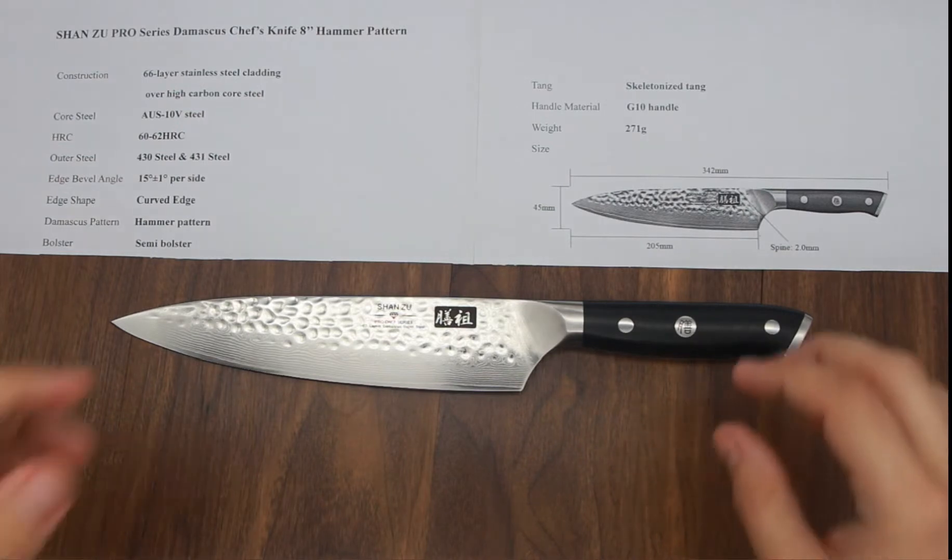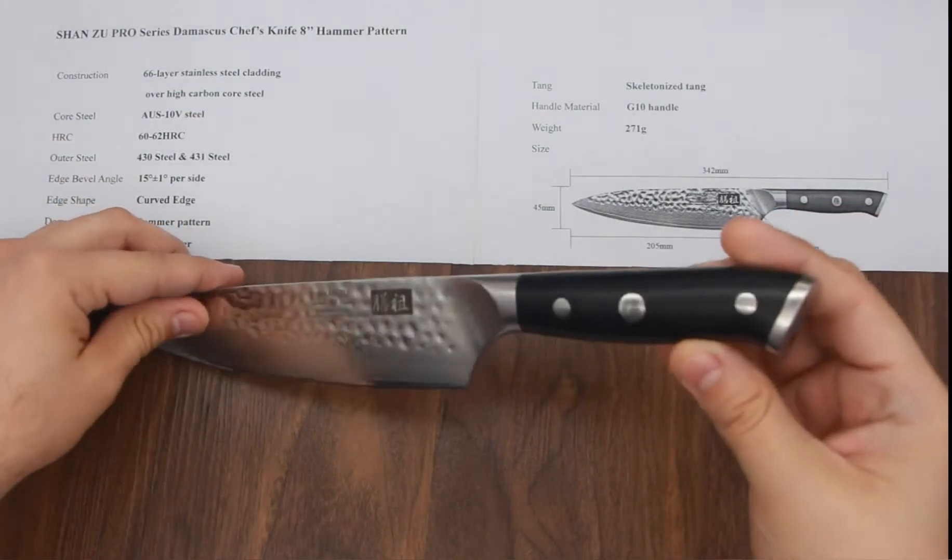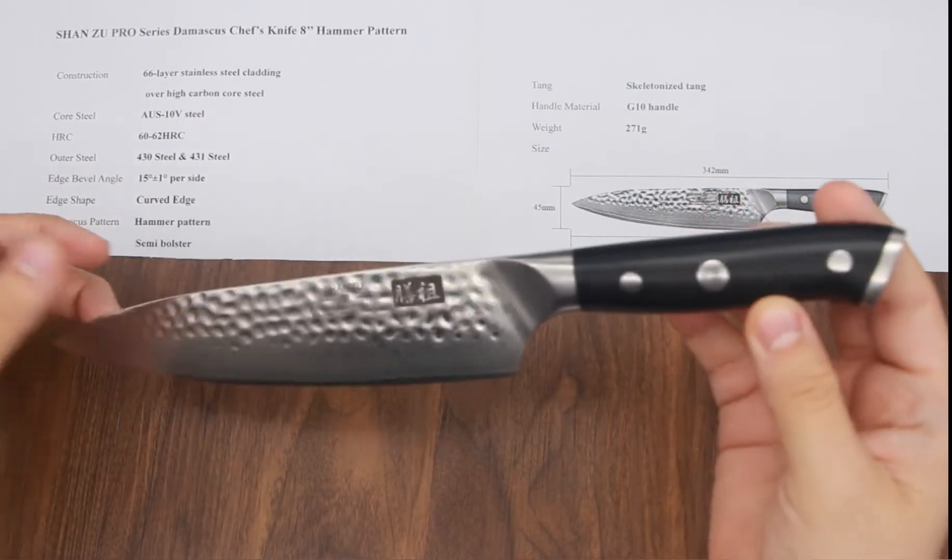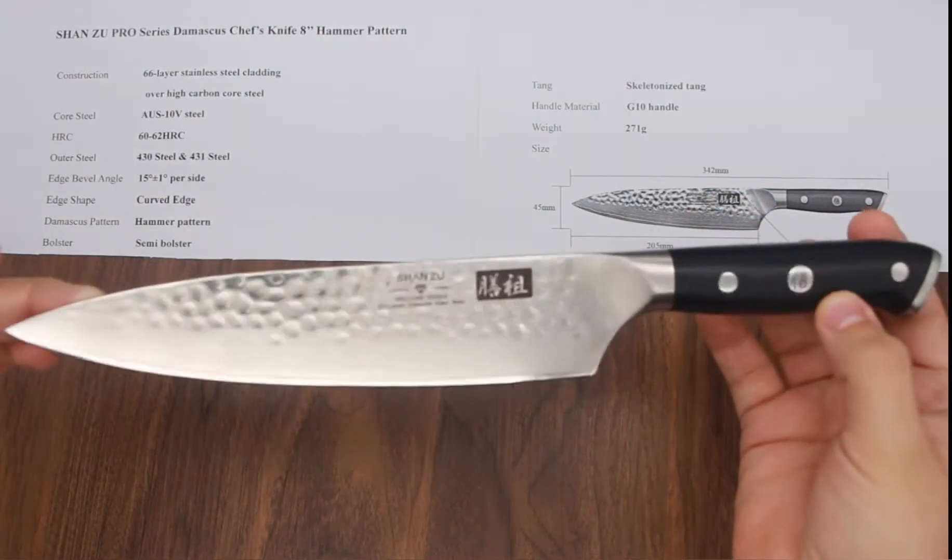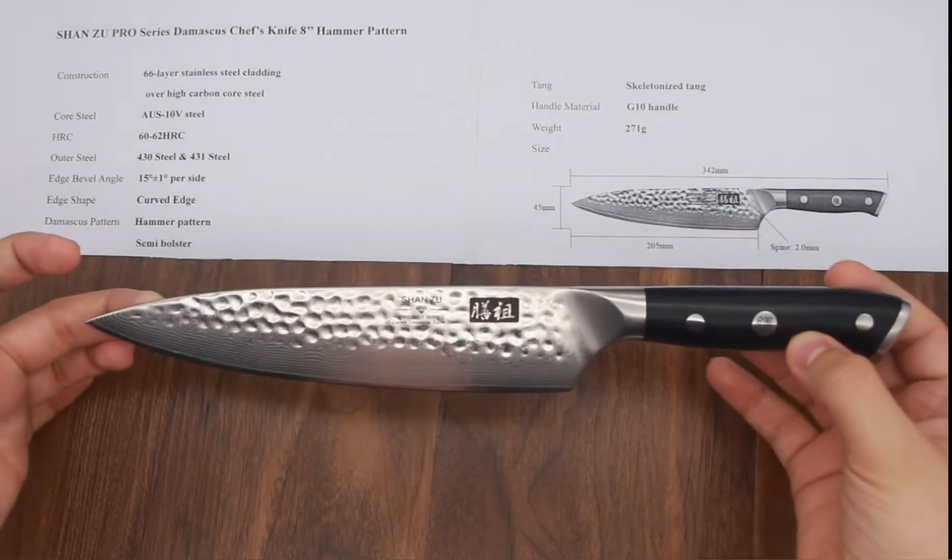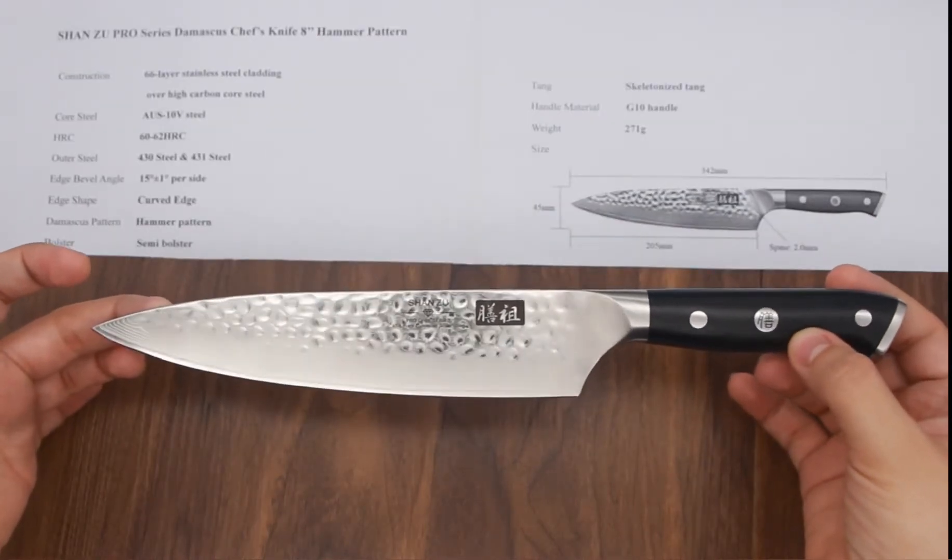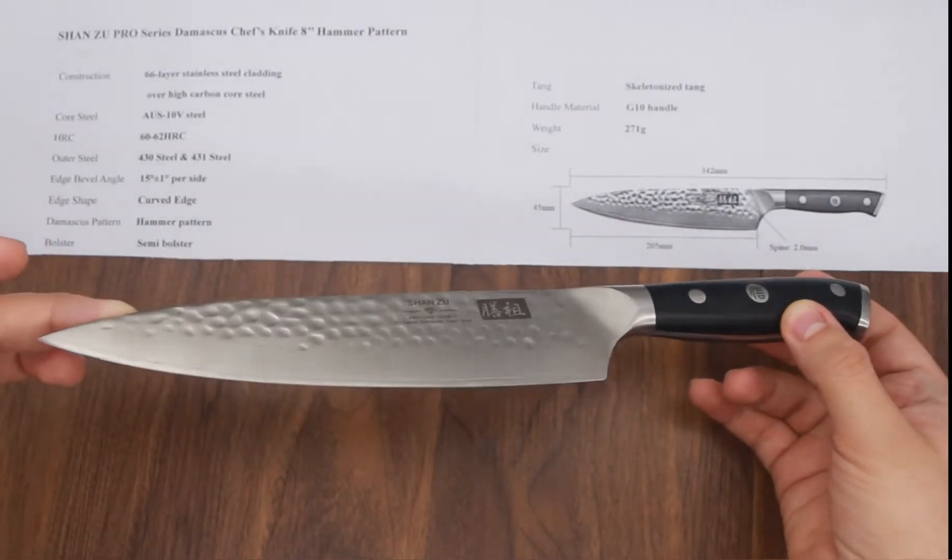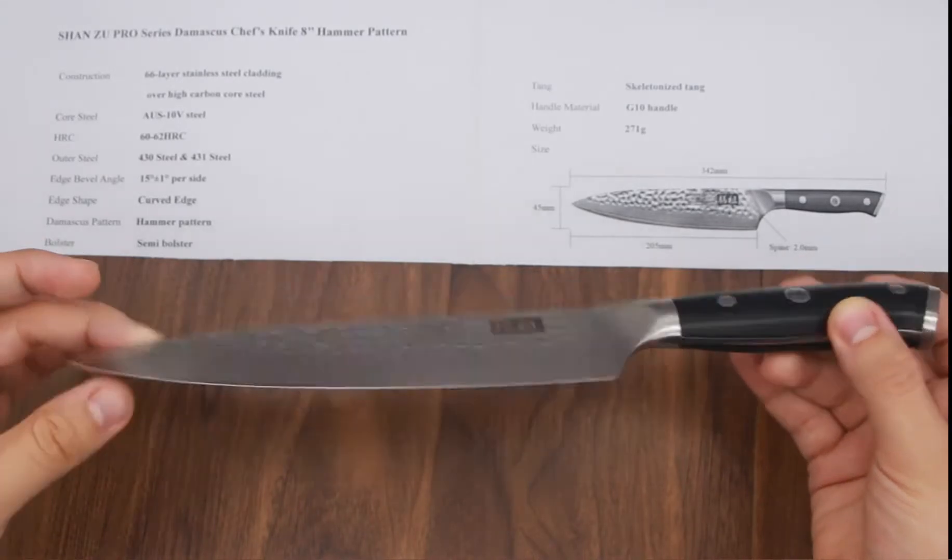This is their 8-inch hammered pattern Damascus knife and as you can see this stunning pattern is simply gorgeous and beautiful to look at. If I may say so myself, this is my favorite knife in their series of knives. I just love looking at this stunning Damascus pattern design.